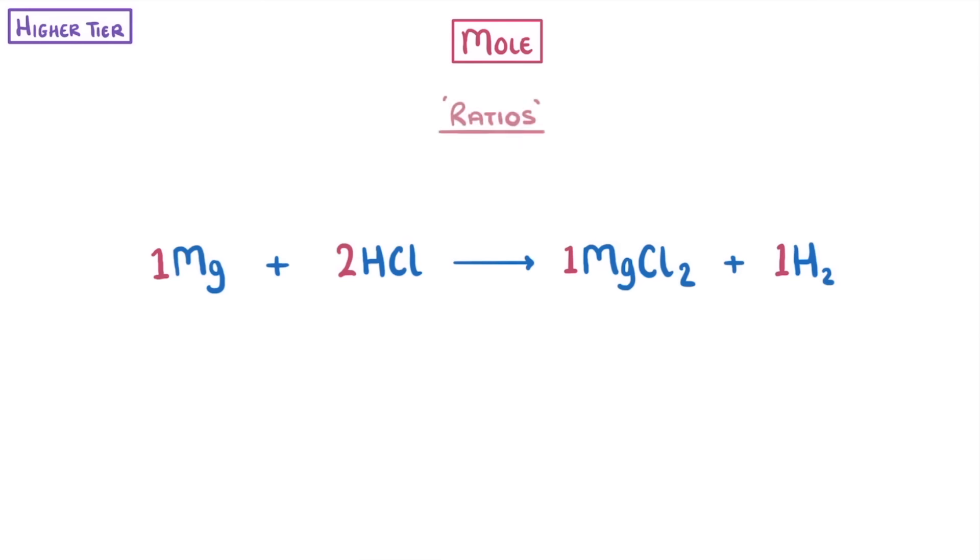And you should think of these as ratios. So if we started with 2 moles of magnesium, we'd have to react it with 4 moles of hydrochloric acid, and it would produce 2 moles of magnesium chloride and hydrogen gas.